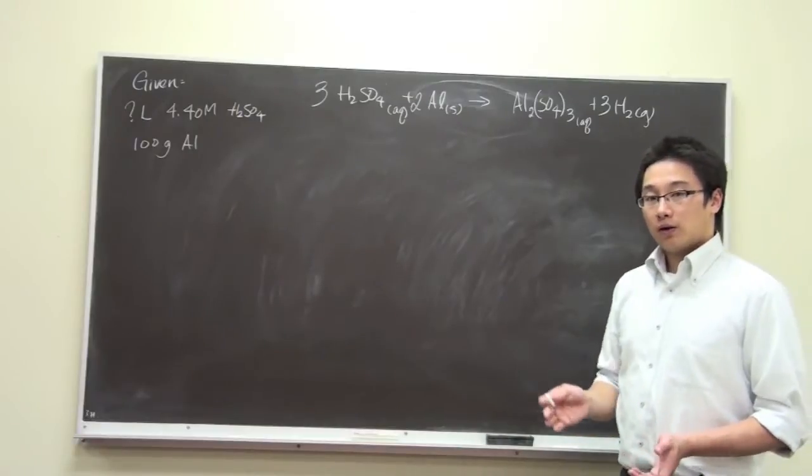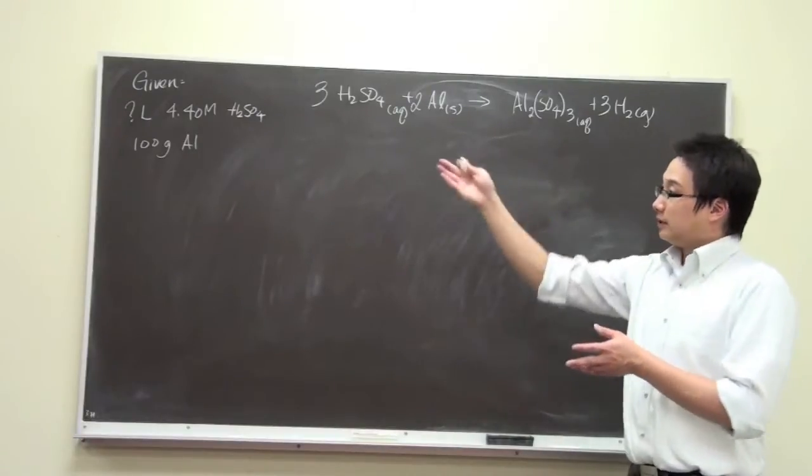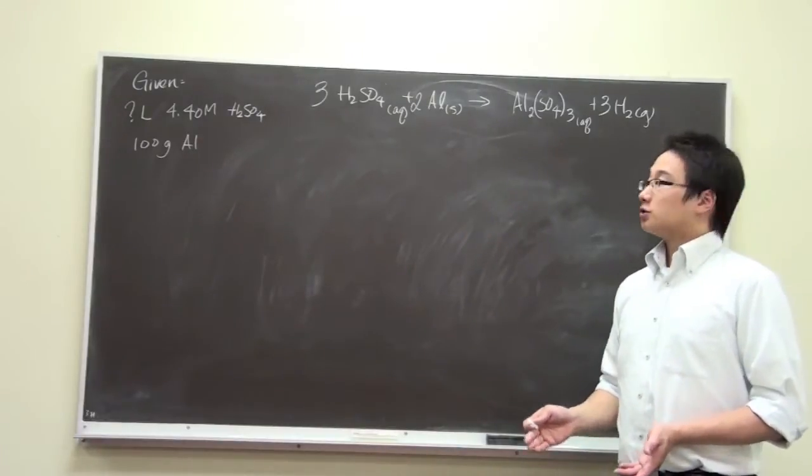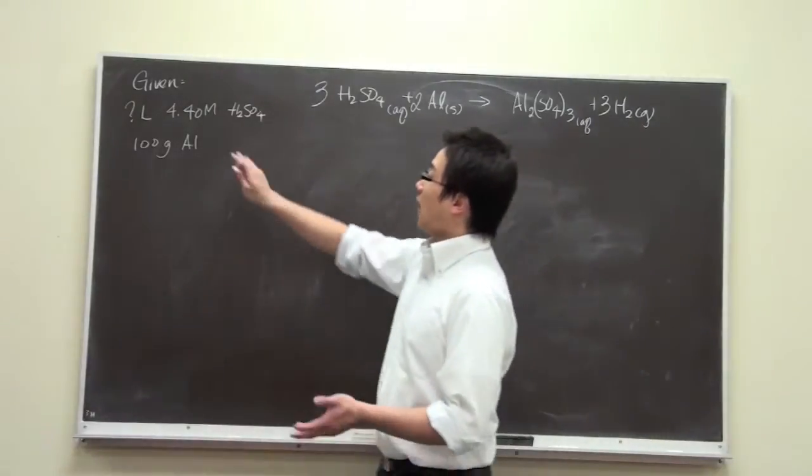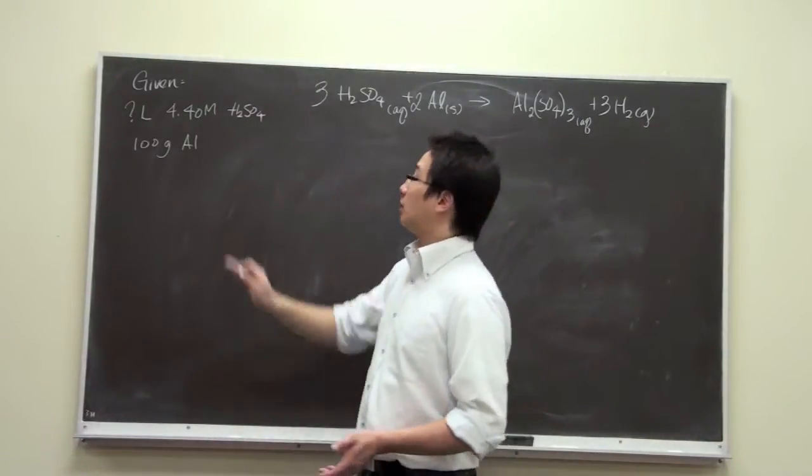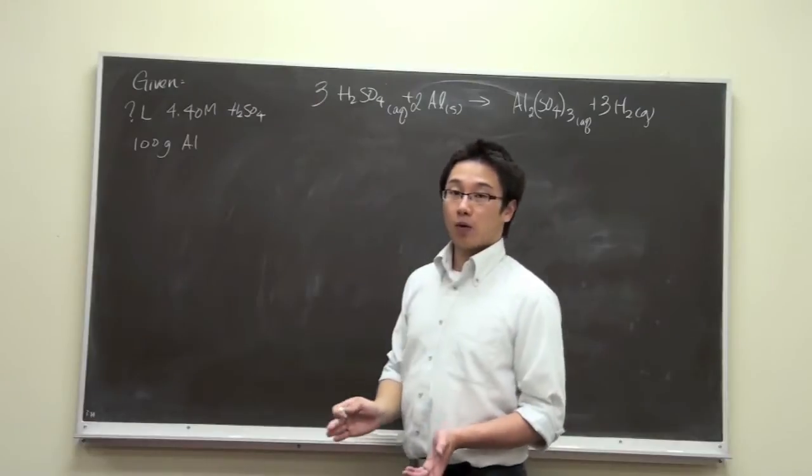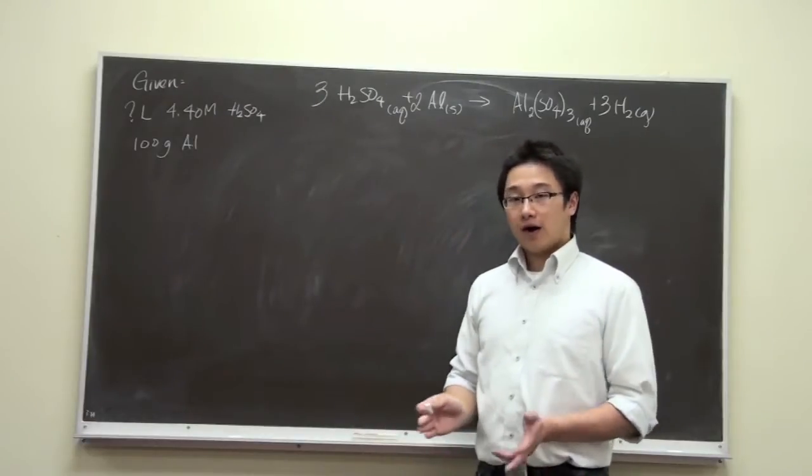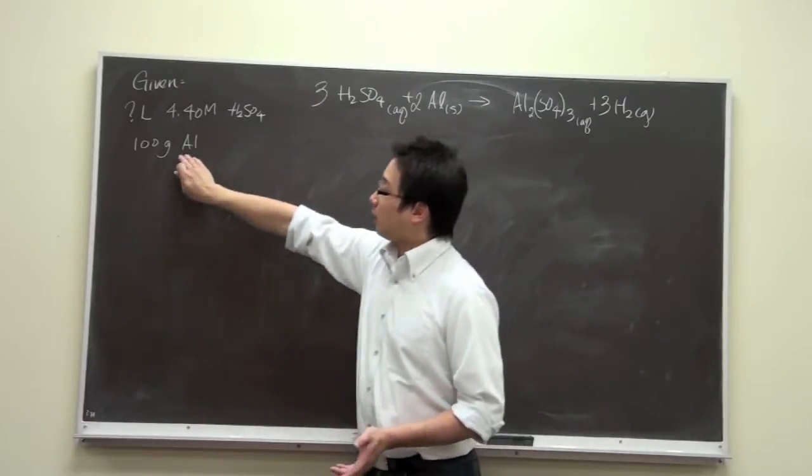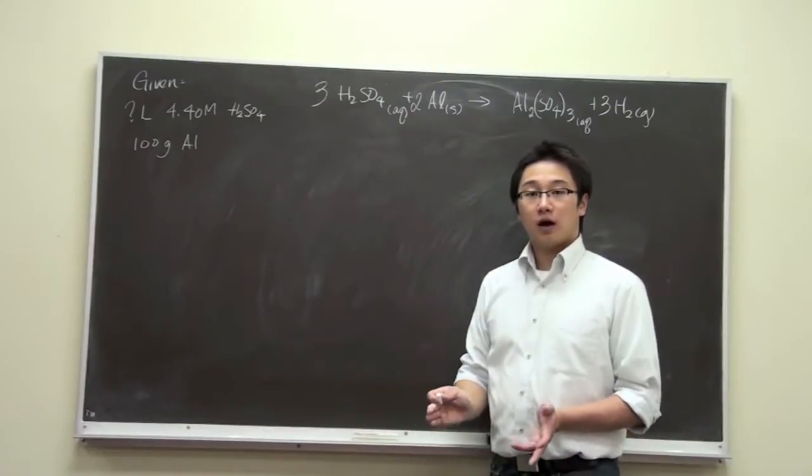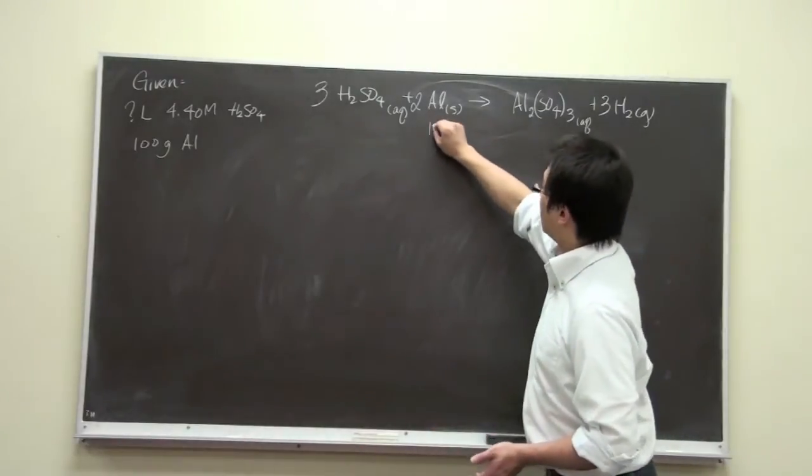Now we can look at the details of the problem. The problem gives us the concentration of the sulfuric acid, which is 4.40 molar, and we don't have the volume. On the other hand, we have 100 grams of aluminum.